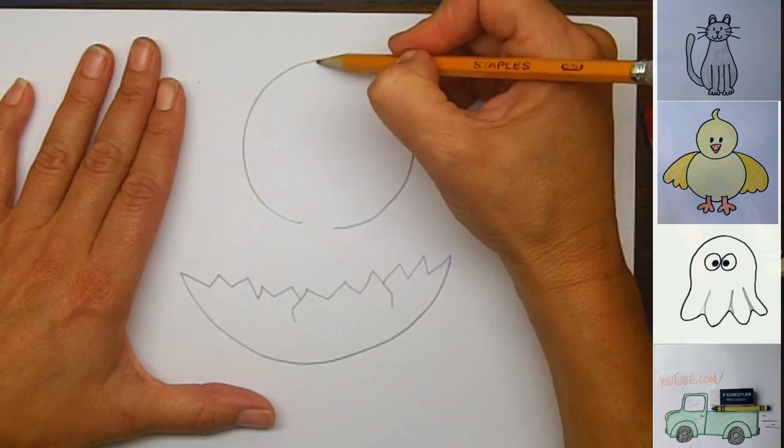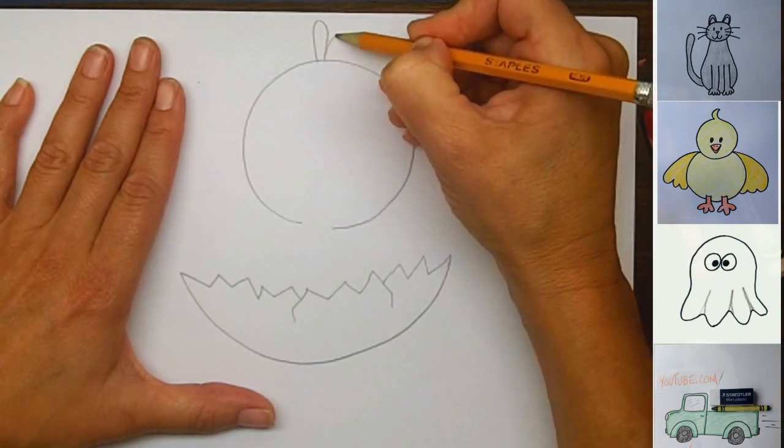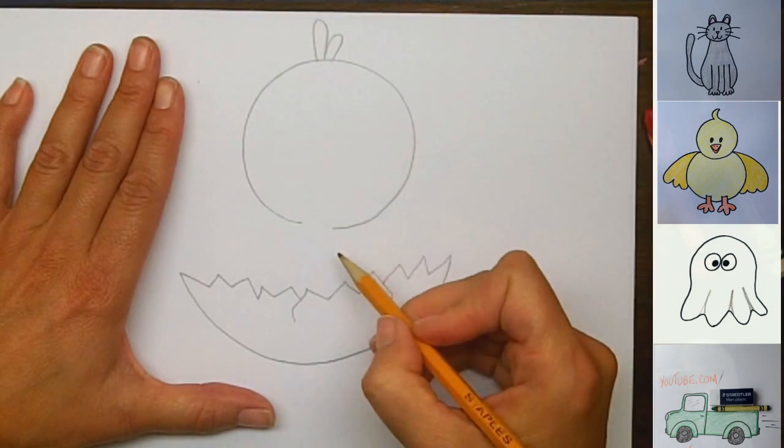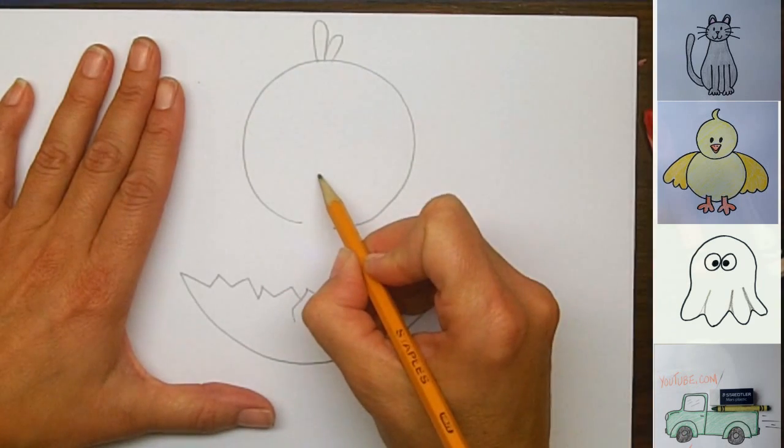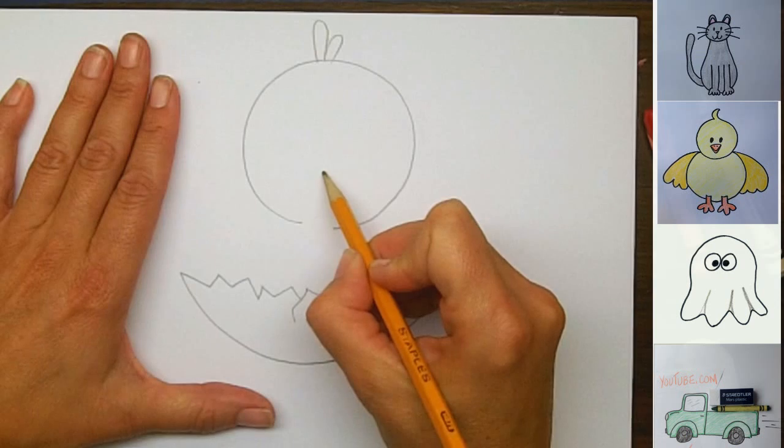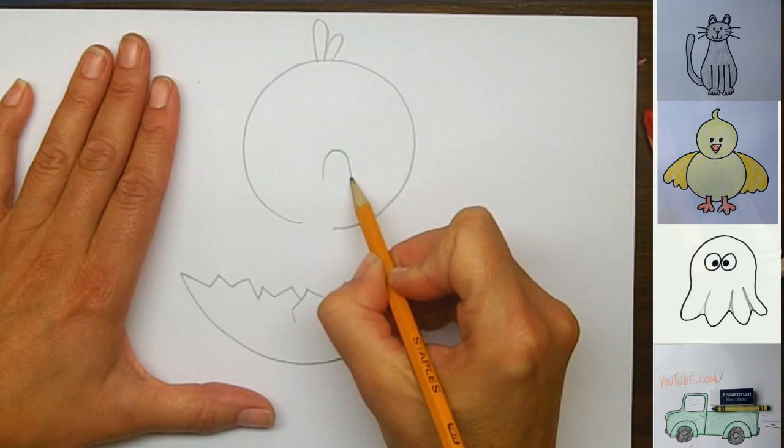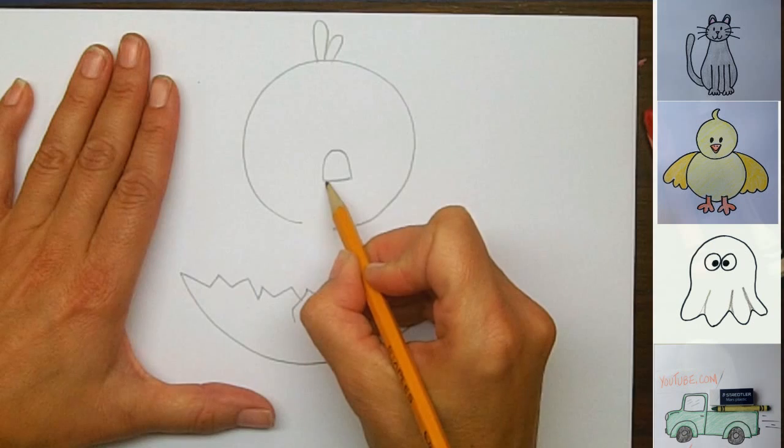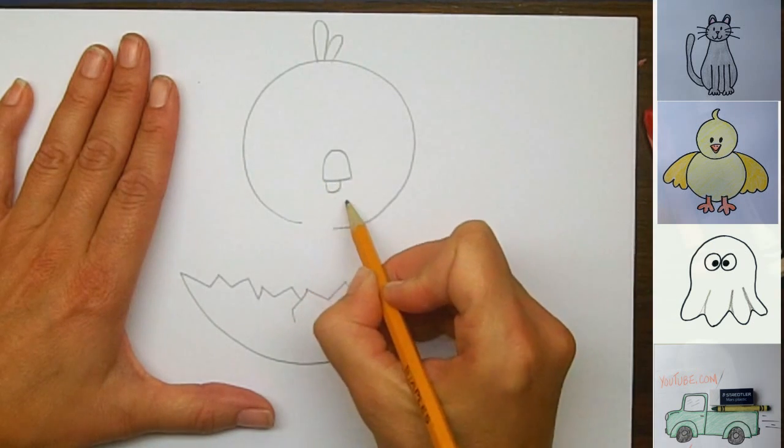So I'm just going to draw some feathers up here, because baby birds are cute when they have feathers. And then I'm going to draw his beak. So right here, I'm going to draw an upside-down U, like this, and then draw a bottom. And then I'm going to draw a right-side-up U for his bottom of his beak.